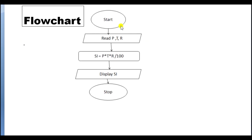Now its flowchart: we have to start, then read P, T, R. In the place of 'read', we can write 'accept' also. In the next step, SI equals P into T into R divided by 100 — this is the formula for simple interest. Then we have to display simple interest, and then stop the program.